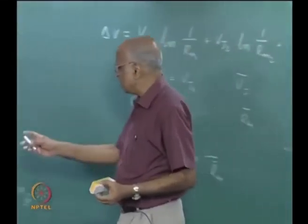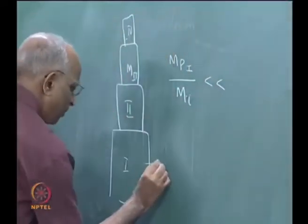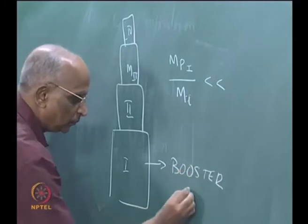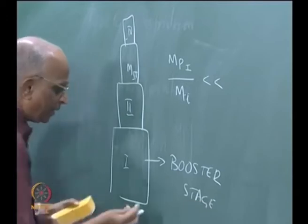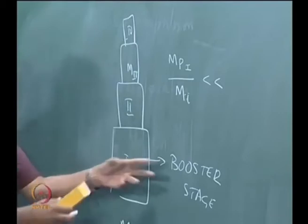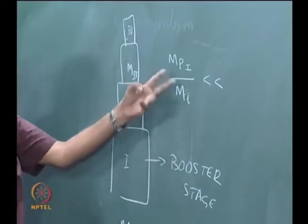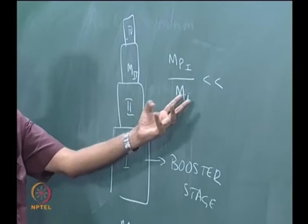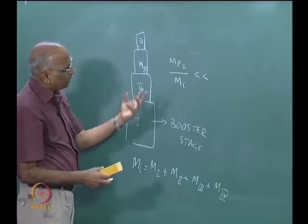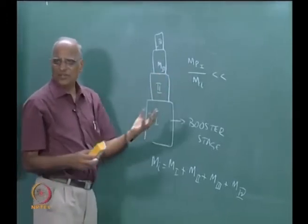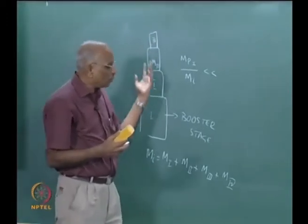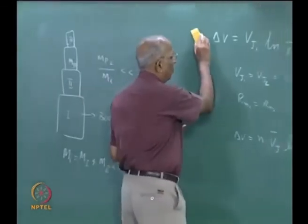Consider a four-stage rocket with initial mass m_i equal to the sum of masses of all stages m_1 + m_2 + m_3 + m_4. In the first stage, the mass of propellant divided by the initial mass of the rocket m_i is going to be small, because so much mass is being carried. The mass of propellant is going to be small compared to the structural, inert, and payload mass. This is called the booster stage — it helps the rocket take off and boosts it.